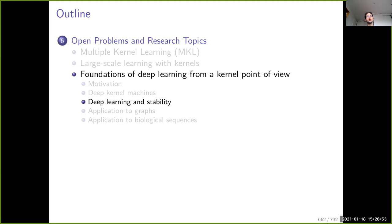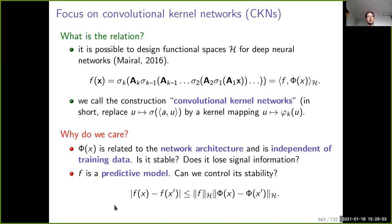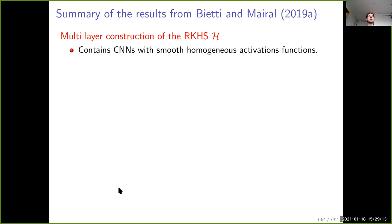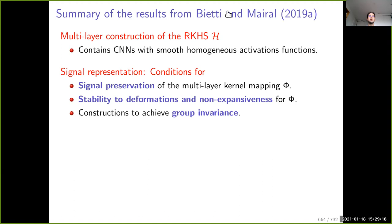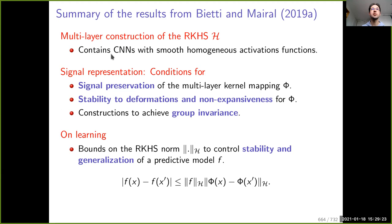I will say a few words about stability now, and the next lecture will be about more applications. About stability: these points were fresh motivation for linearizing deep neural networks, and there was a motivation about controlling the stability of predictions. We had a long paper with my former student Alberto Bietti, whose results can be summarized as follows.